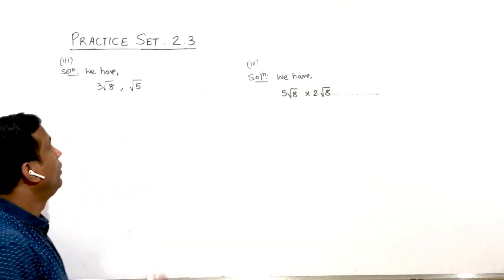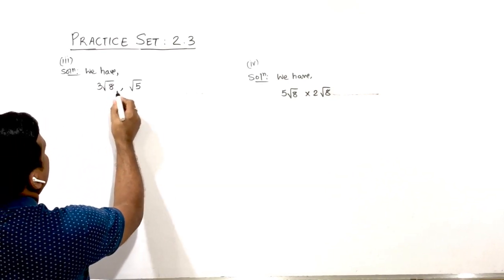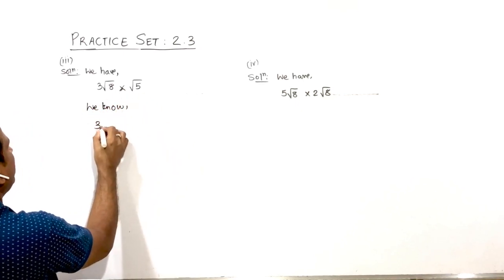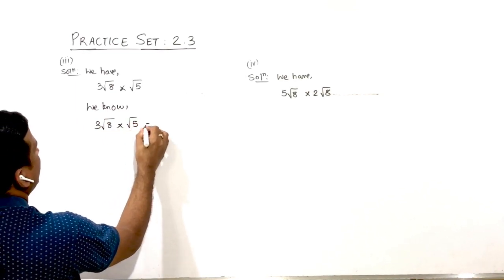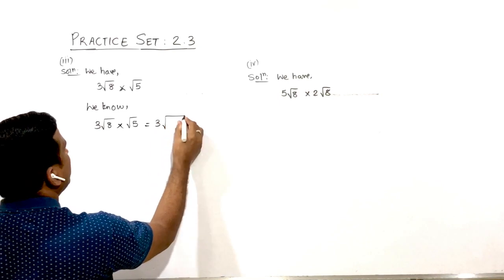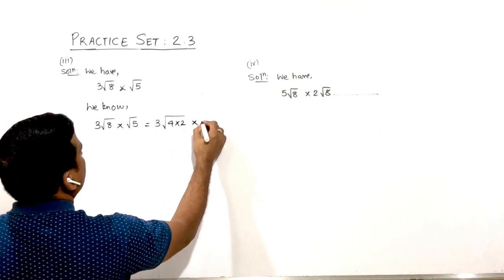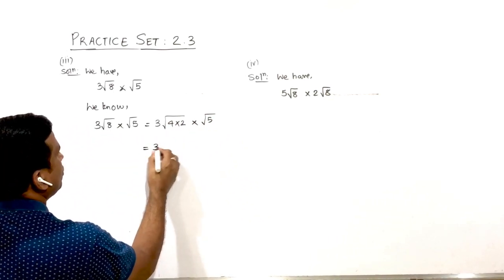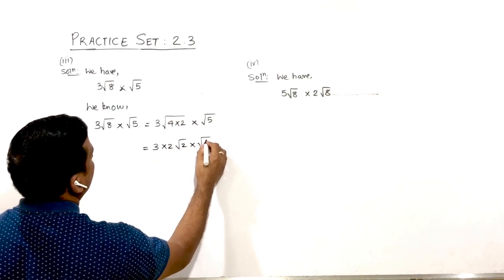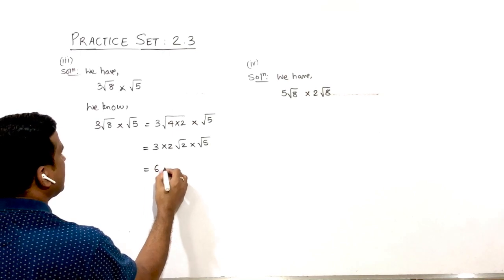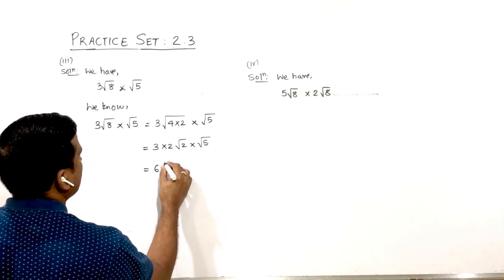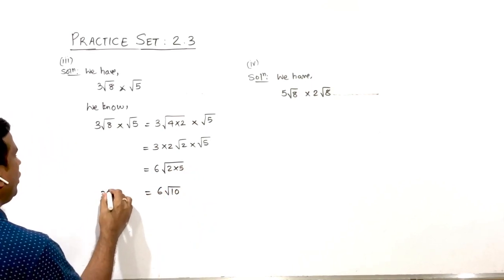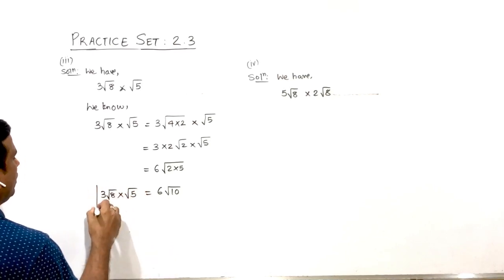Question number 3: 3√8 × √5. First simplify: √8 = √(4 × 2) = 2√2, so 3 × 2√2 = 6√2. Then 6√2 × √5 = 6√10. Therefore the simplified form of 3√8 × √5 is 6√10.